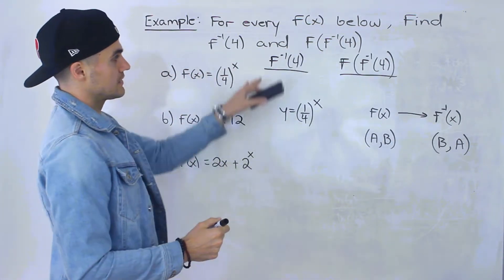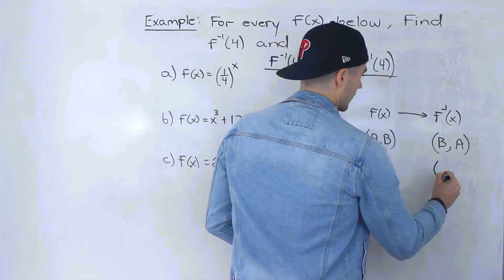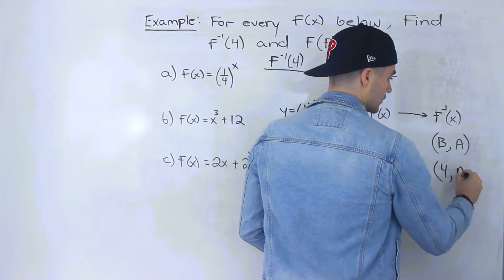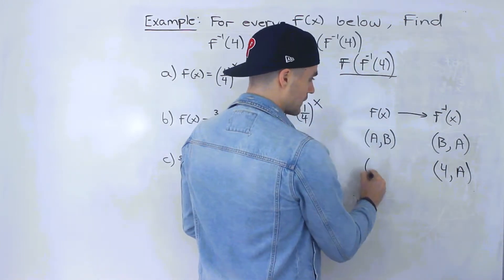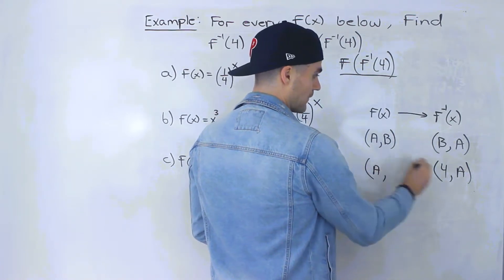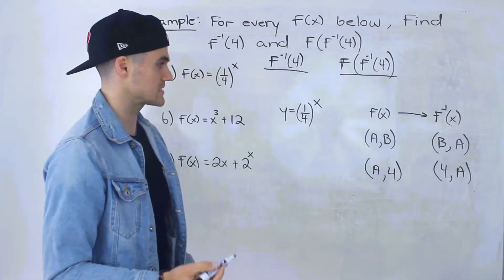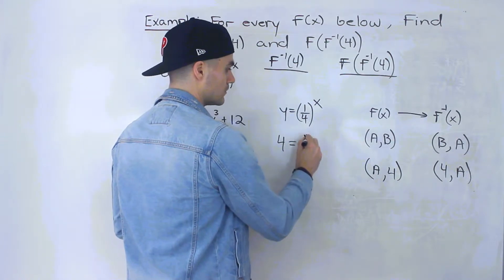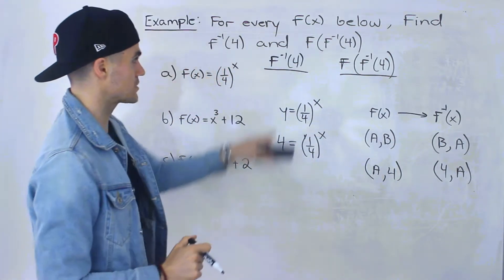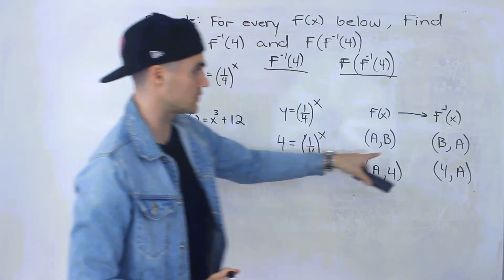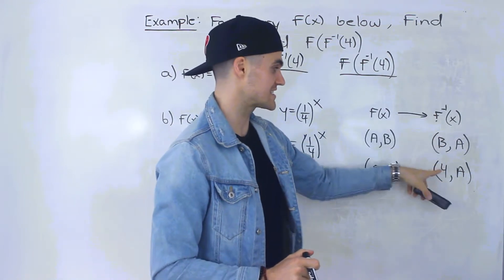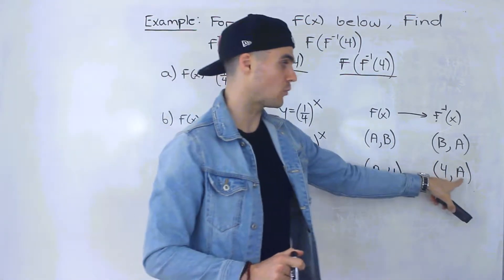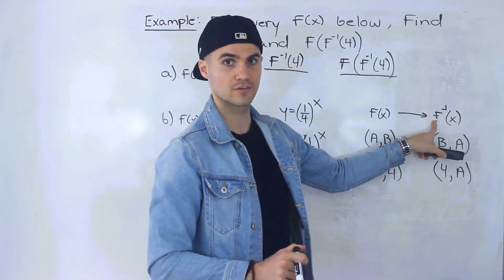Notice what they're asking for: the value of the inverse when the x value in the inverse is 4. With the function, that means we're looking for the x value when the y value equals 4. So to solve this, we can get the equation of the inverse, or we can just plug in 4 for the y value in the function. So f inverse of 4 is the x value in the inverse, which is the same as the y value in the function — we solve for x in the function and that's the answer.